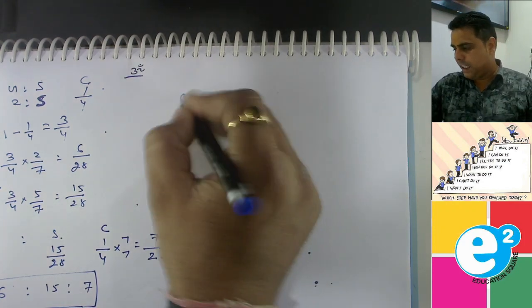Now the question: what amount of goodwill brought by C will be received by gold or silver? C brings goodwill, how much? 14,000. Which will be taken by old partners, which will be taken by sacrificing ratio. Gold and silver's sacrificing ratio is 2 ratio 5.